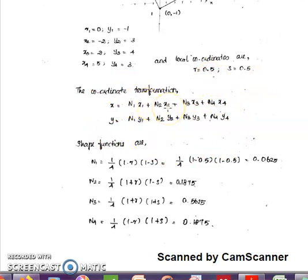N1, N2, N3, N4 are shape functions. N1 = (1/4)(1-r)(1-s). This is the general formula for shape functions for a 4-node quadrilateral element.